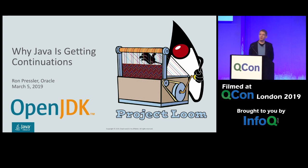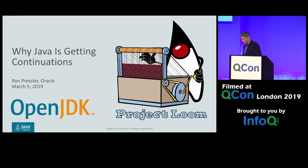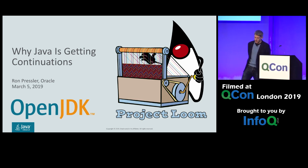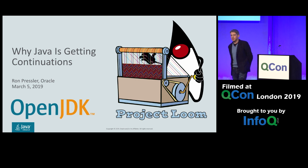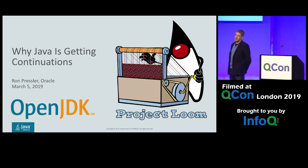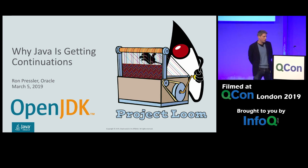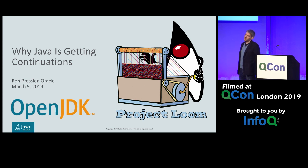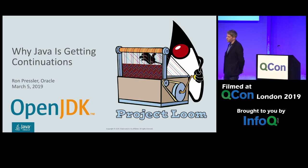Hello, my name is Ron Pressler. I work at Oracle here in London as part of the Java Platform Group — the group that develops OpenJDK, designs the Java language, the JVM, and the core libraries. I serve as technical lead for Project Loom, the project intended to add continuations and fibers to the JDK.